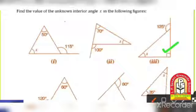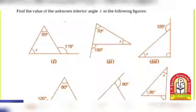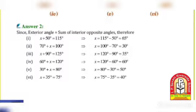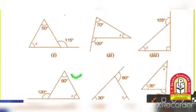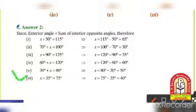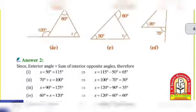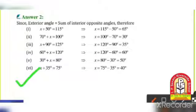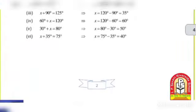Then after next: 90 plus X is equal to 125, so X is equal to 125 minus 90, that is 35. Then after next: 60 plus X is equal to 120, so X is equal to 120 minus 60. Then after next: 30 plus X is equal to 80, so X is equal to 80 minus 30, that is 50. Then after: 35 plus X is equal to 75, so X is equal to 75 minus 35, that is 40.